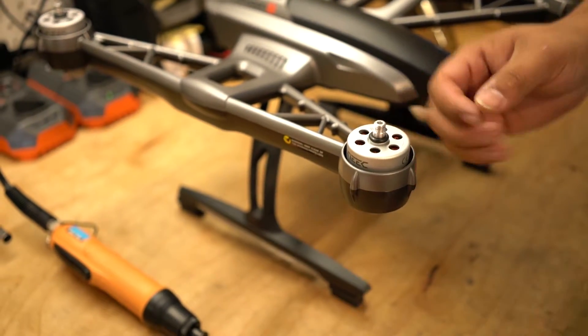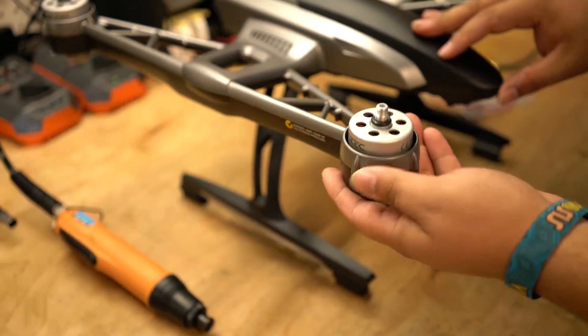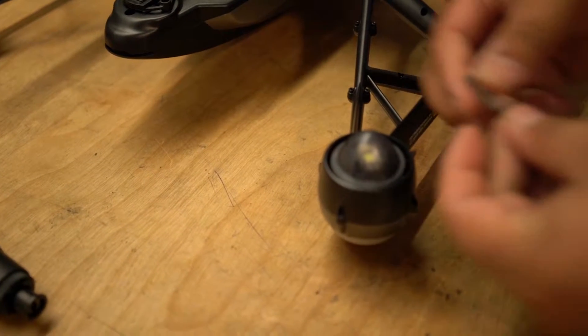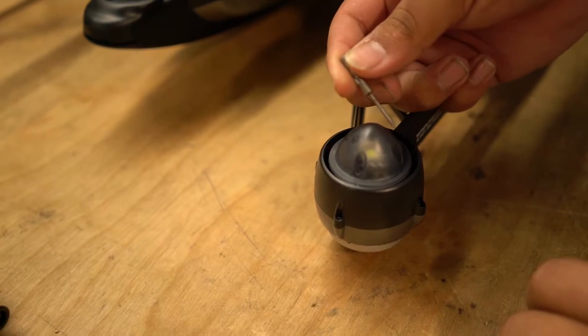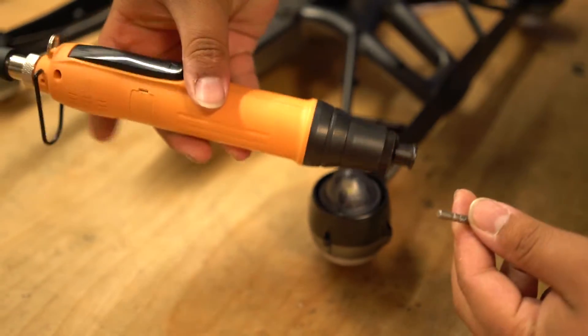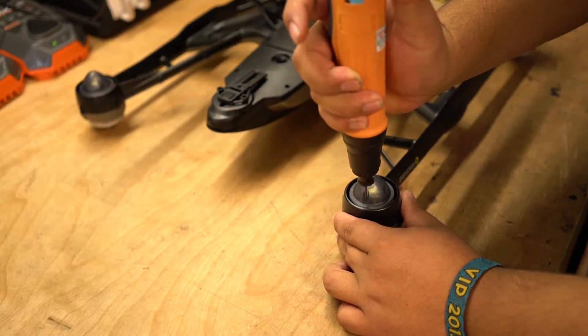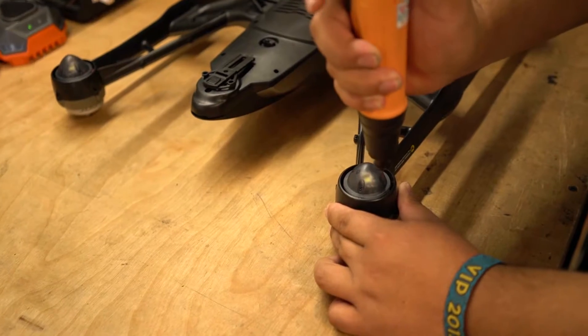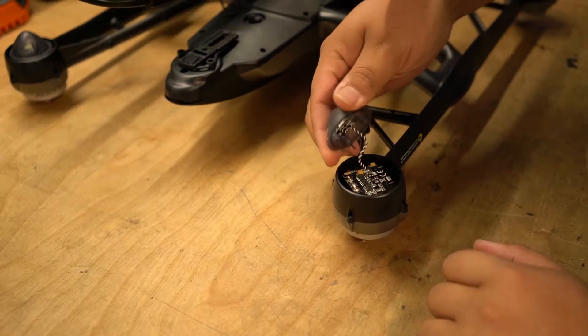Alright, so here we have our motor. This is a B. It doesn't matter if it's A or B. All we need to do is change the ESC. So the first thing we're going to do is flip it over. And here we have the light cover. You use a Phillips screwdriver or screwdriver bit, a small one. In our case we have a tool to take these out. Just pop that in, make sure you're centered in the screw, and pull these out. Make sure they're out all the way.